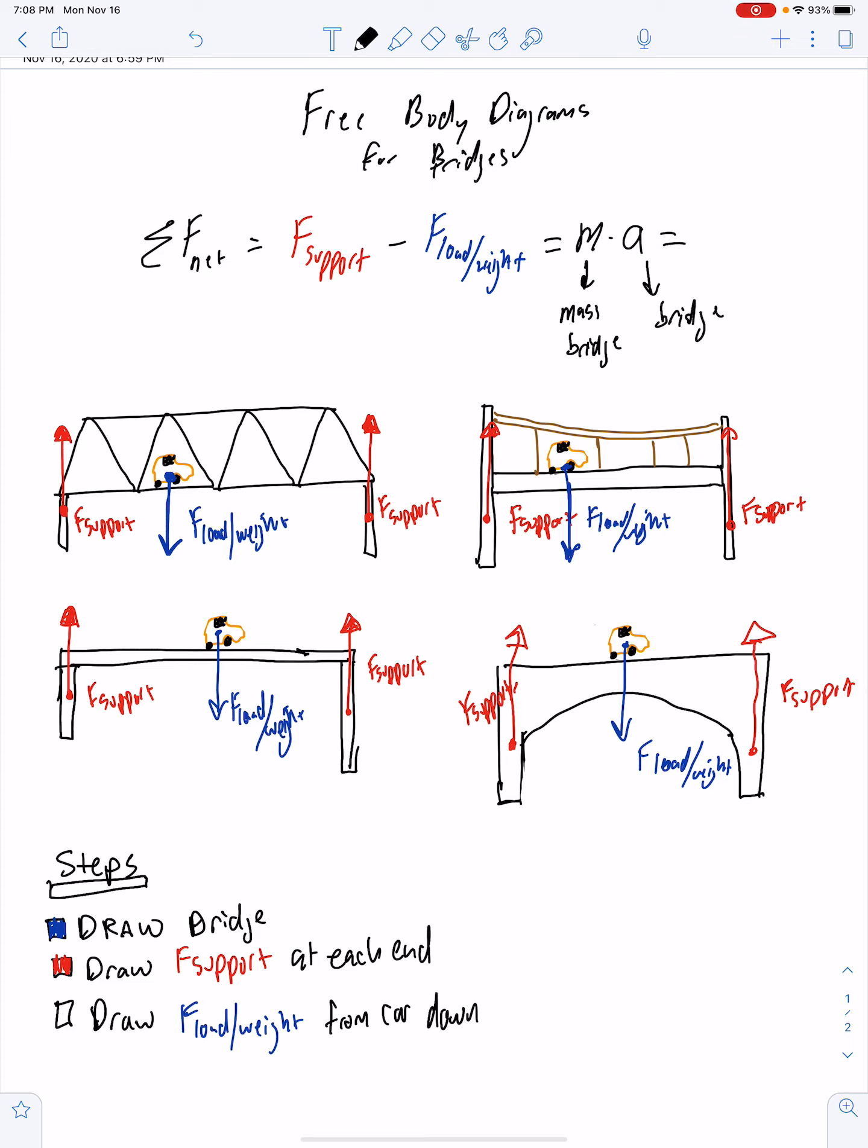And we know that, of course, that is equal to zero when at equilibrium, meaning our bridge is not accelerating, which means our bridge is not collapsing. Okay, so remember, our goal of good bridge design is to ensure we're always at equilibrium.